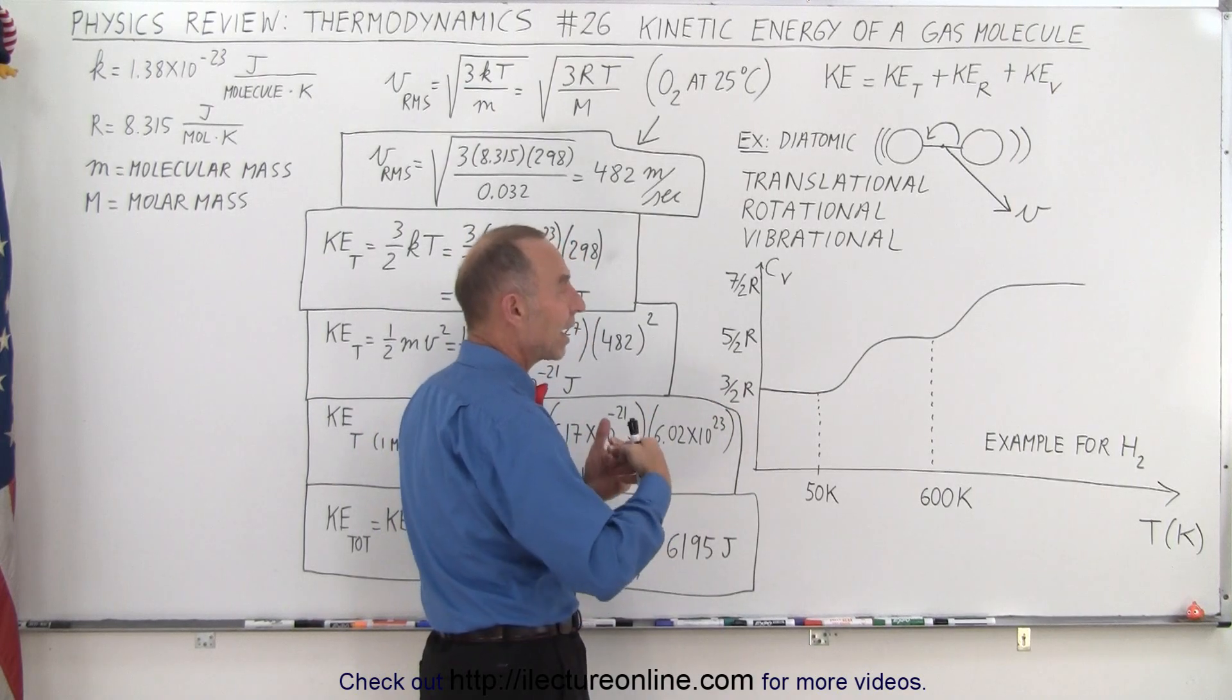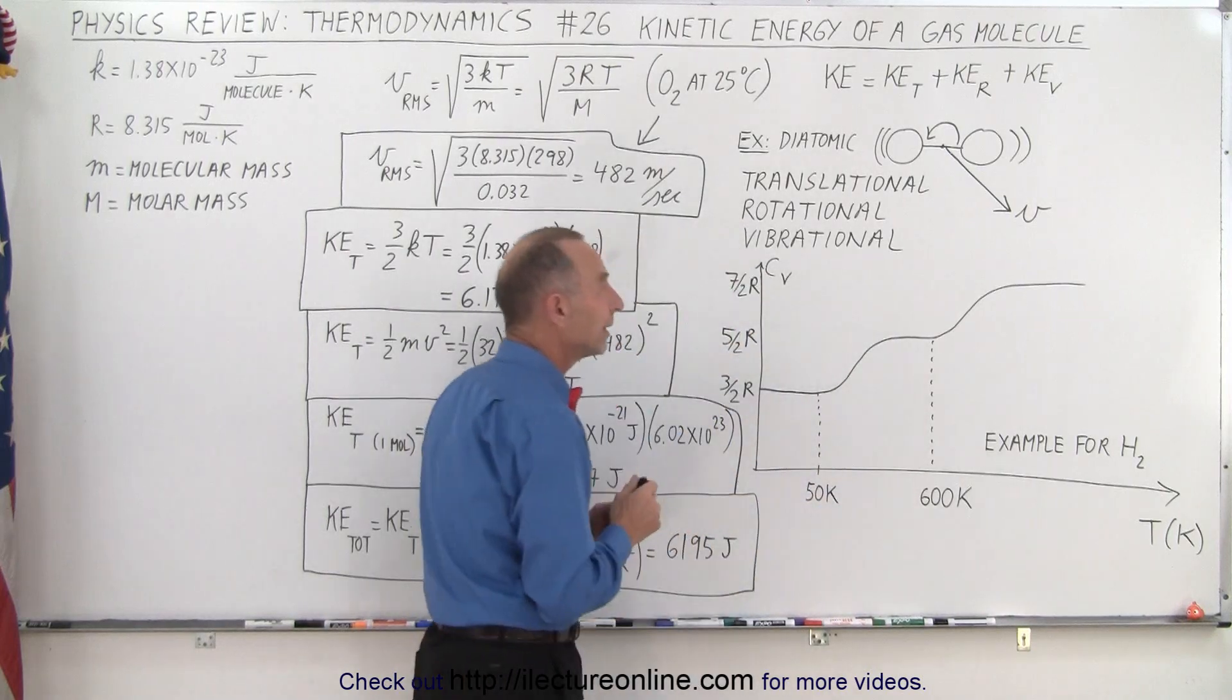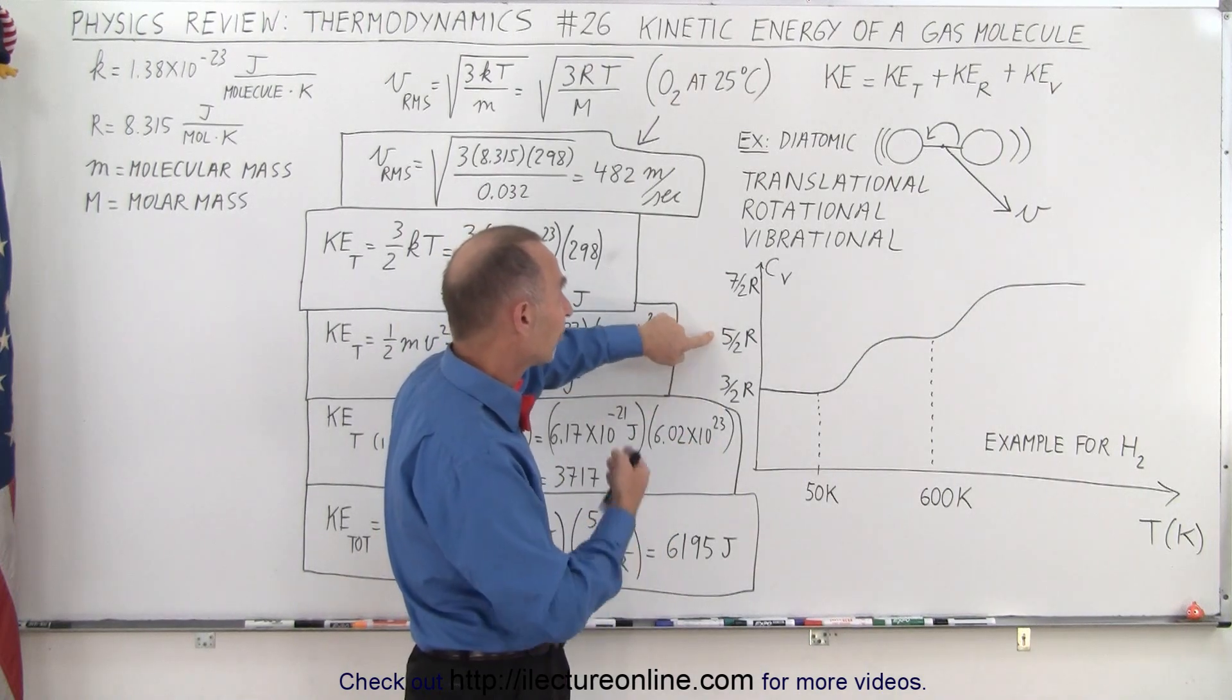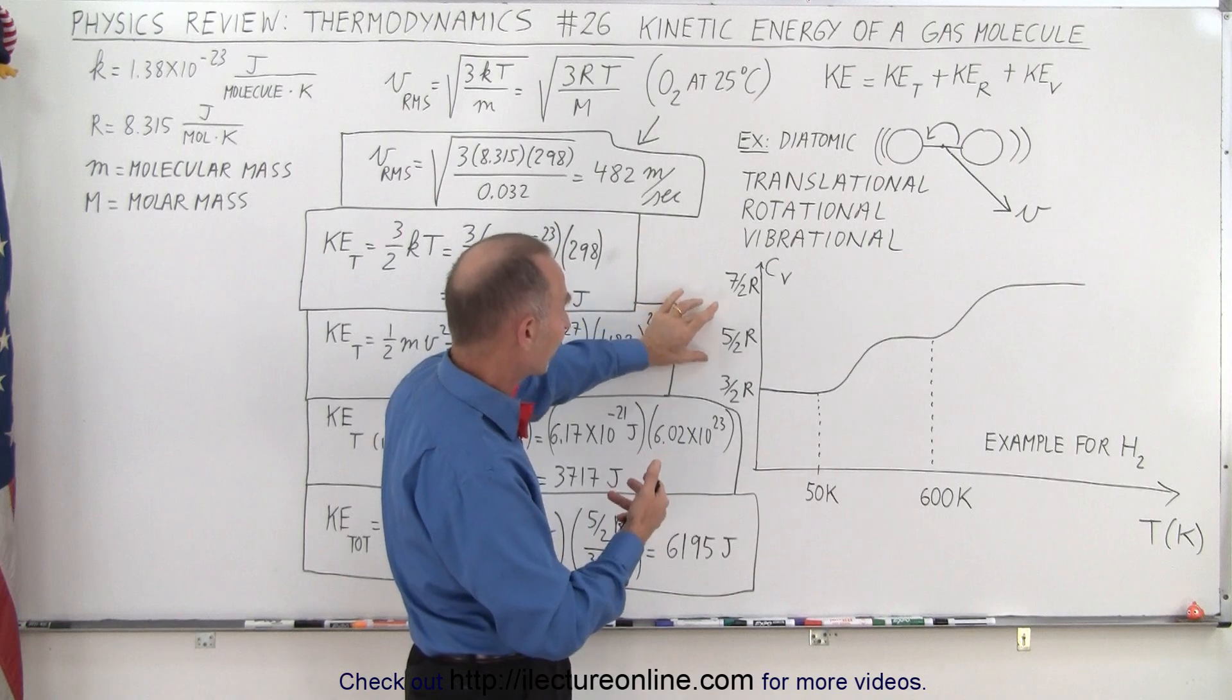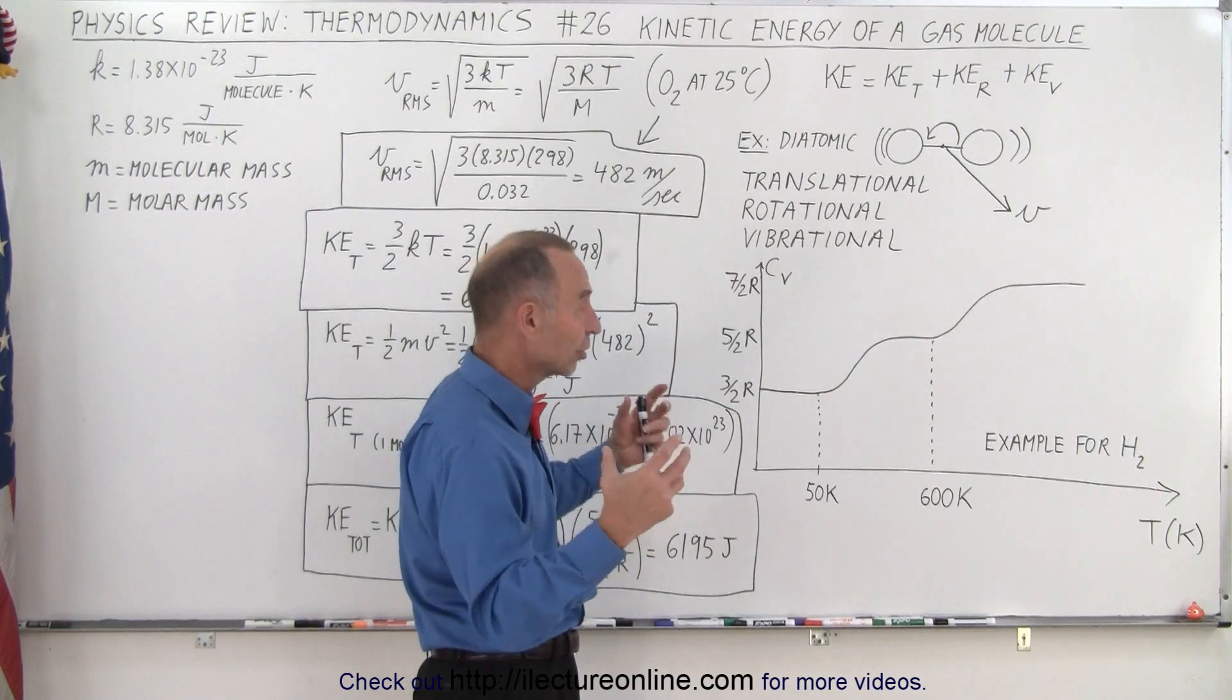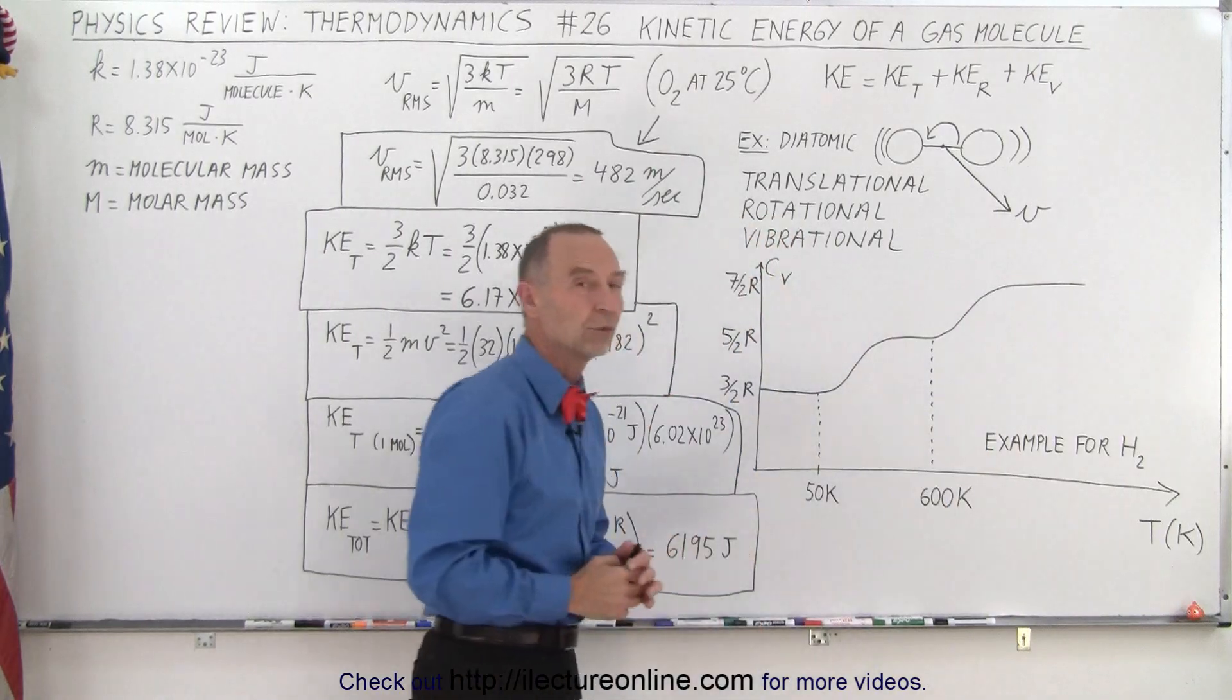But if it also has additional rotational kinetic energy that happens at higher temperatures, then you'll have to add another two times a half R, totaling a total of five halves R, meaning it's another 67 percent greater amount of kinetic energy than purely due to its translational motion. And then if it can also begin to vibrate it can add some additional kinetic energy as well.